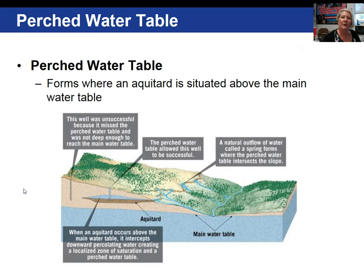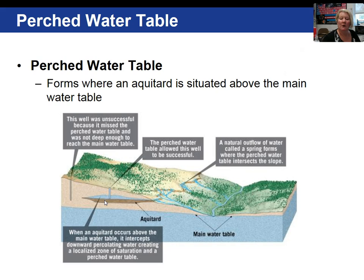Sometimes you can put a well into what's called a perched water table. That situation is where you have an aquitard that is not allowing the flow of water past it, and above it water is pooling in the pore spaces. Here is an example: the aquitard is a shale, and this well is successful because there is groundwater sitting on top of this aquitard.